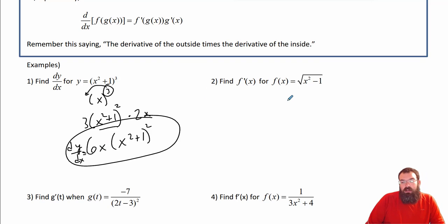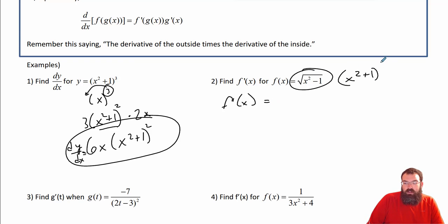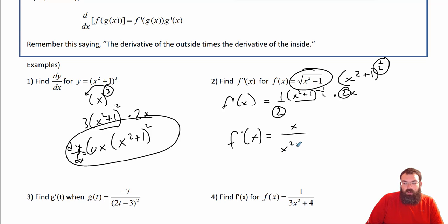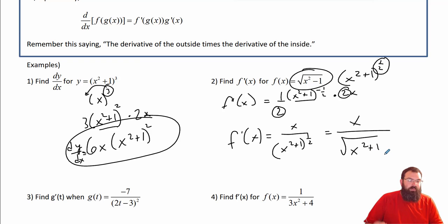Find the derivative of this one. So f prime of x: I'm going to rewrite this as (x² + 1) to the 1/2 power. I bring the 1/2 down, keep the x² + 1, subtract 1 to get negative 1/2. Then multiply by the derivative of the inside which is 2x — this 2 and this 2 cancel. So f prime of x equals x over (x² + 1) to the 1/2, or x over the square root of x² + 1. Either way is fine.